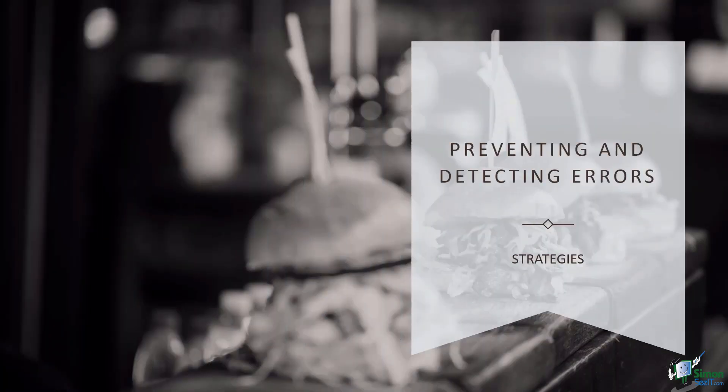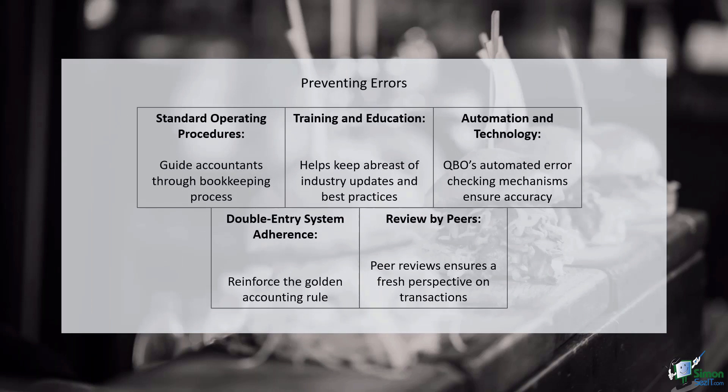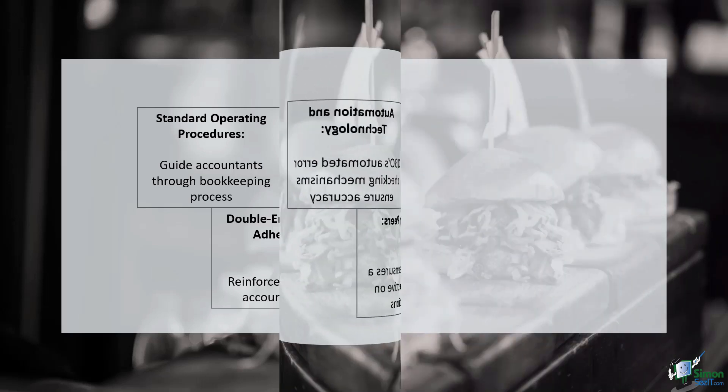But how do we prevent and detect these errors? Enter the realm of prevention and detection strategies. Establishing clear SOPs acts as a treasure map, guiding accountants through each step of the bookkeeping process. Regular training sessions keep accountants abreast of industry updates and best practices. Embrace automation to minimize human error — QuickBooks Online's error-checking mechanisms are a powerful ally in maintaining accuracy. Reinforce the golden rule of accounting: every debit must have an equal and opposite credit. Foster collaboration and accountability within the team; a peer review process ensures a fresh perspective on transactions.